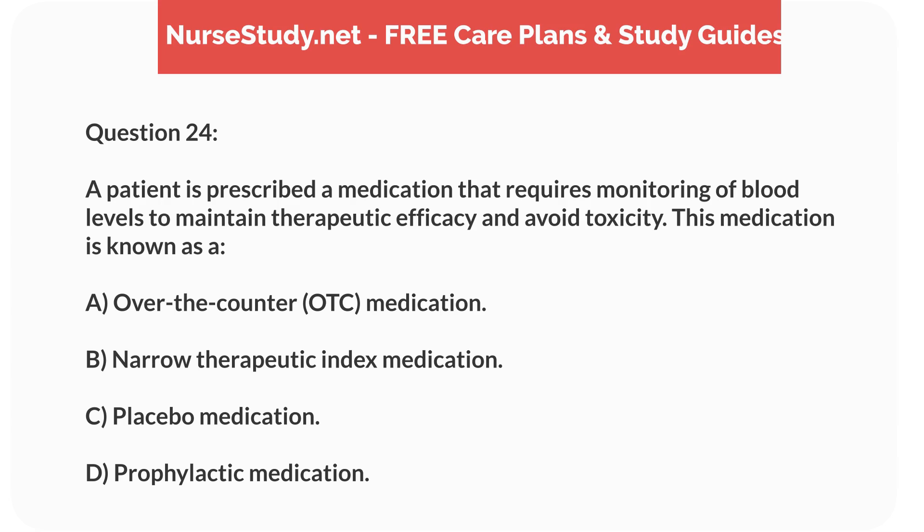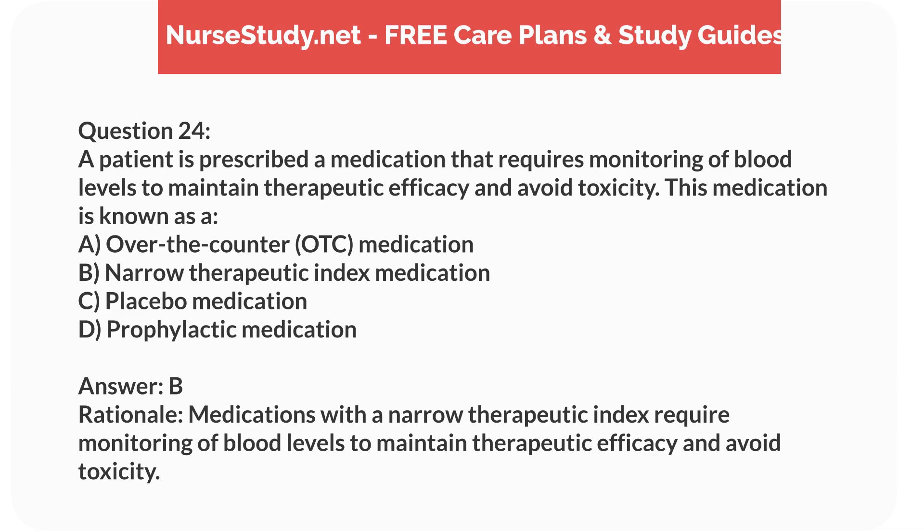Question 24. A patient is prescribed a medication that requires monitoring of blood levels to maintain therapeutic efficacy and avoid toxicity. This medication is known as: A. Over-the-counter (OTC) medication. B. Narrow-therapeutic-index medication. C. Placebo medication. D. Prophylactic medication. Answer: B. Rationale: Medications with a narrow therapeutic index require monitoring of blood levels to maintain therapeutic efficacy and avoid toxicity.